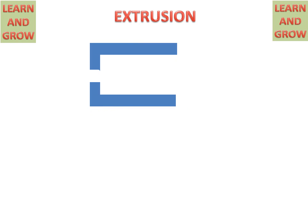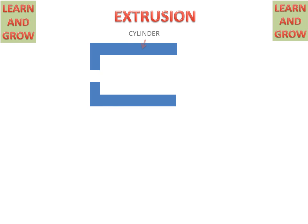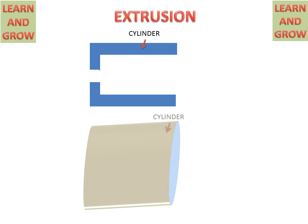Firstly, we will discuss about all the parts of the extrusion in two dimensional and three dimensional. We have a cylinder in which the heated billet will be placed. This is the cylinder — this is the 3D view and this is the 2D view.